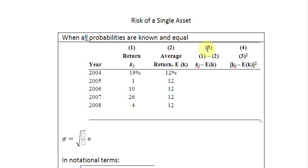The next step is to take the difference in column number 3 of the values in column number 1 and column number 2. So 19 minus 12 is going to give us 7%. Then next one, 1 minus 12 is going to give us minus 11. Next one, 10 minus 12 is minus 2. Next one, 26 minus 12 is 14. And then the last one, 4 minus 12 is minus 8.